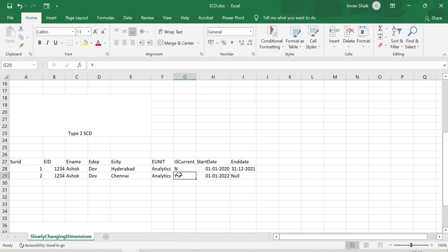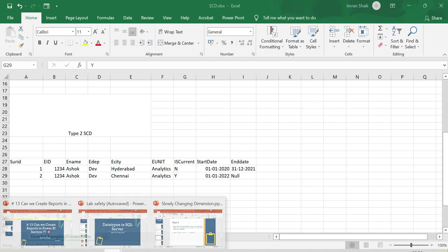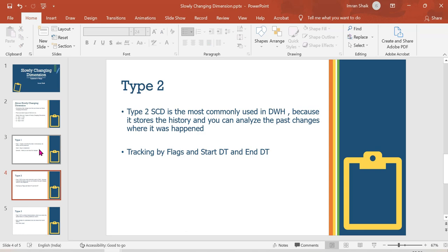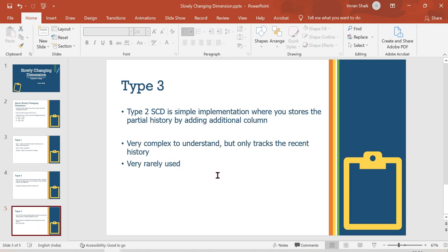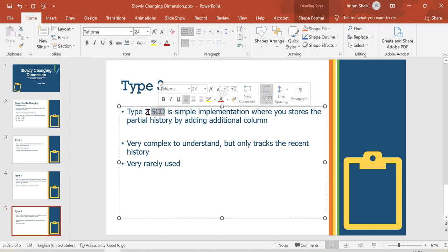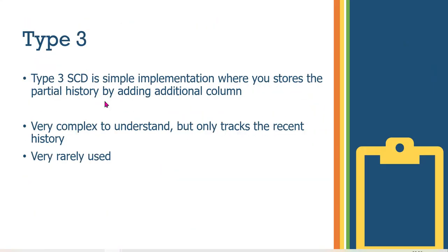In Type 2 SCD, we mostly use a flag and start date and end date to track data. That is Type 2 SCD — clear. Now moving on to Type 3 SCD.